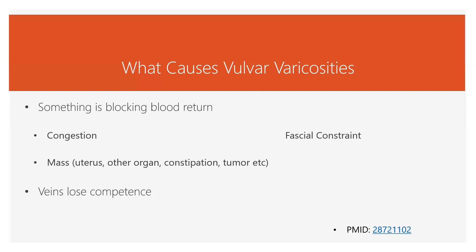The main reasons for congestion can be fascial constraint. Fascia is the connective tissue — kind of like saran wrap — a web that goes around everything throughout your whole body. You can have fascial constraints somewhere else that are pulling on the pelvic region and creating constraint there.